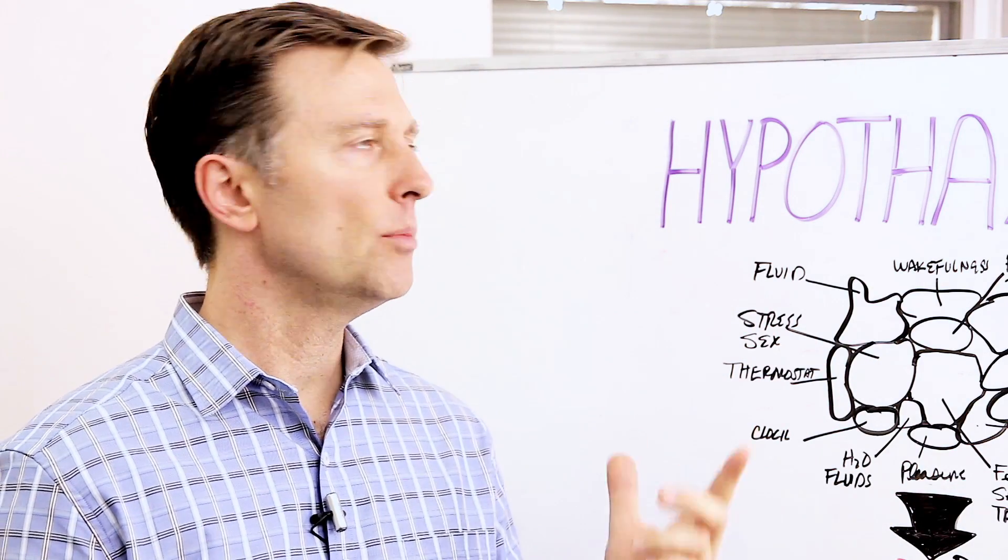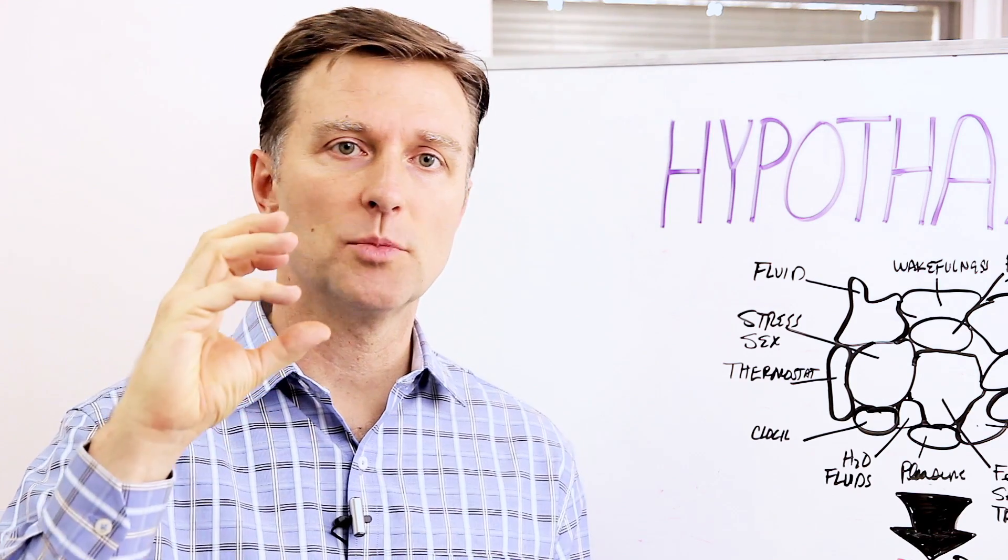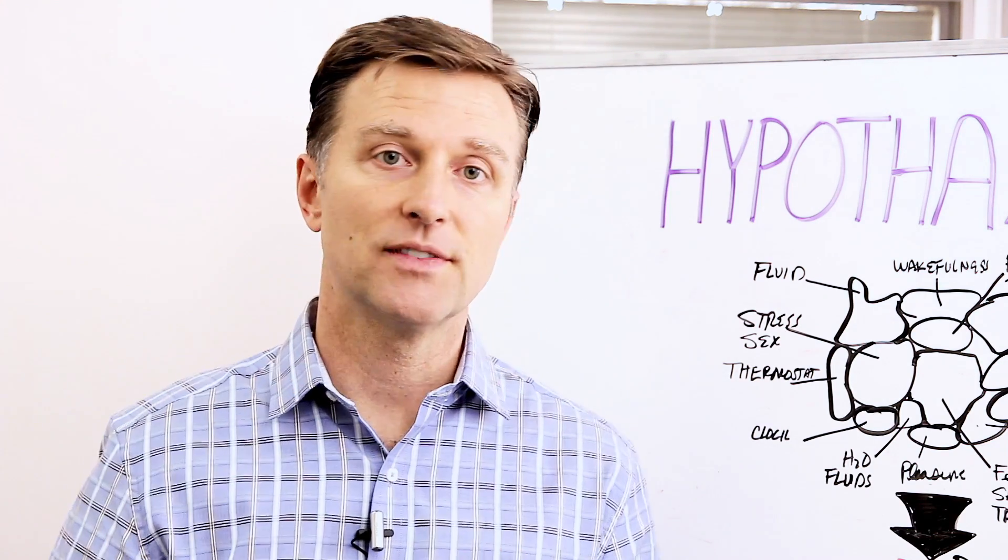What is the hypothalamus? Hypo meaning below thalamus. So there's a structure in the brain called thalamus. It's right below it, the size of an almond.